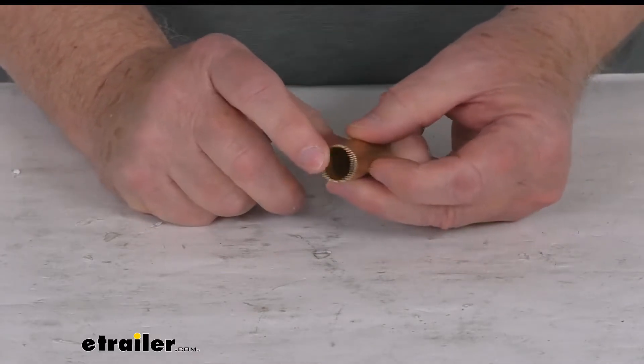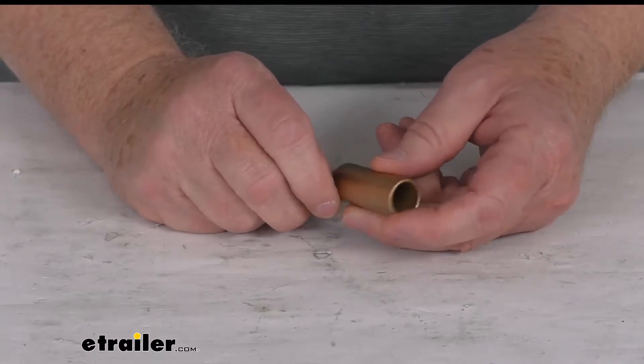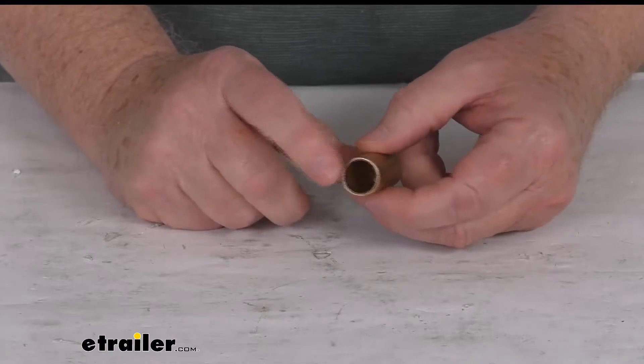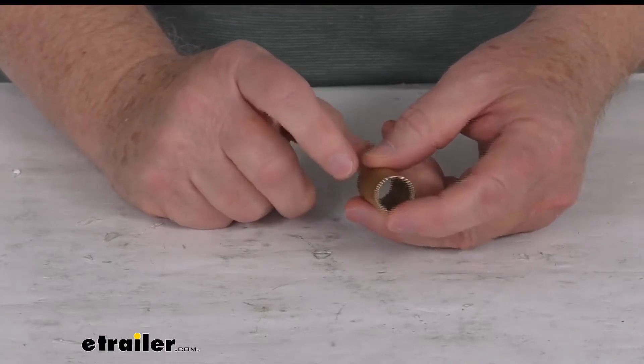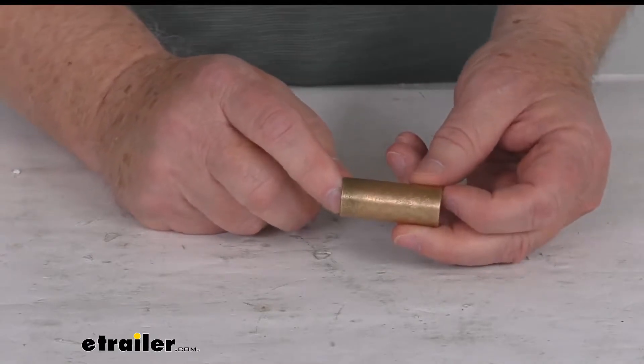Now this part will replace one bronze eye bushing for your Lippert Equiflex or the center point equalizer systems. Those systems come with these bronze bushings. Now these are designed to work with the one and three-quarter inch wide leaf springs and equalizers.